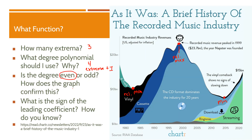How does the graph confirm this? I look at both sides: on this side of the graph, if I continue the shape it would go up to infinity, and on this side it would also go up to infinity. Both sides go the same direction, and when both sides go the same direction it's an even function.